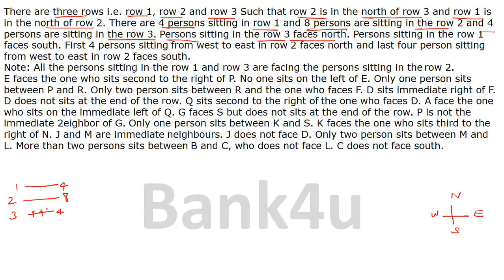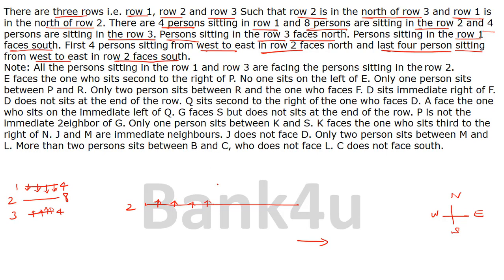So these are the 4 people in row 3 who are going to face north. Persons sitting in row 1 face south. The first 4 persons from west to east in row 2 also face north, and the last 4 persons from west to east in row 2 face south.